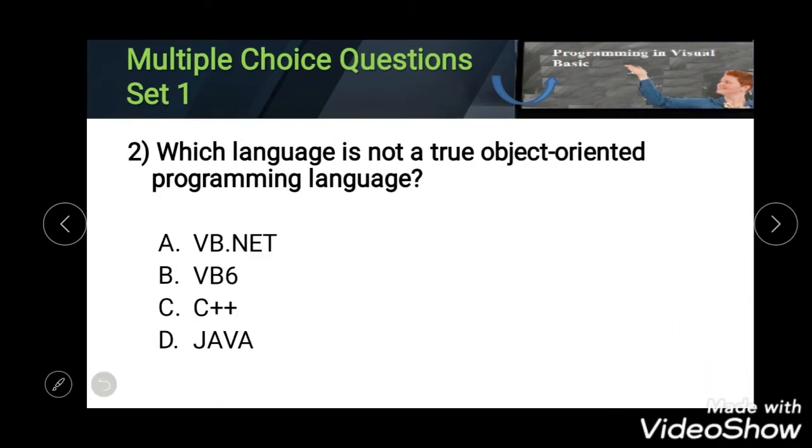Next question: which language is not a true object-oriented programming language? Options: VB.NET, VB6, C++, and Java. The correct answer is VB6.